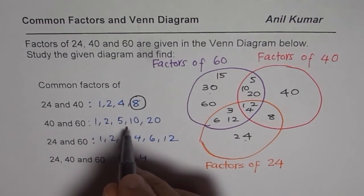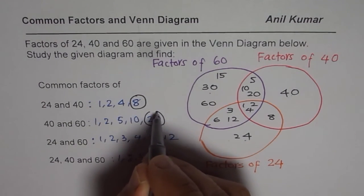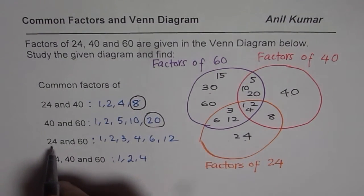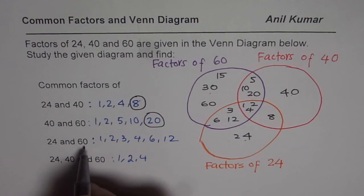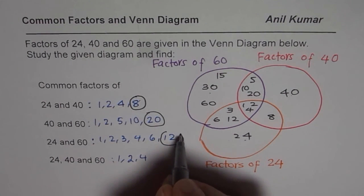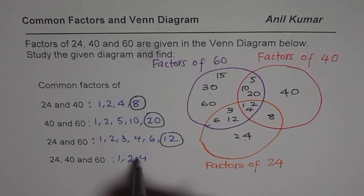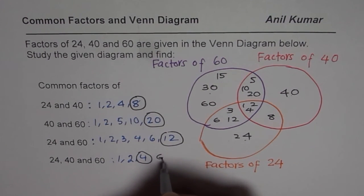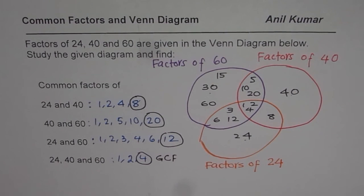In this group, the greatest common factor is 20. For 24 and 60, the greatest common factor is 12. And in all three, the greatest common factor is 4. That is the greatest common factor in each group.